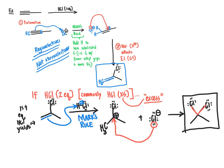We essentially repeated the same mechanism doing another addition reaction. The type of product formed — where both chlorine atoms end up bonded to the same carbon — is called a geminal dihalide. The term geminal means attached to the same carbon atom. Compare this with a vicinal dihalide, where the two halogens are on adjacent carbons; geminal means both halogens are on the same carbon.